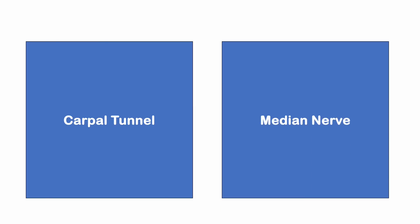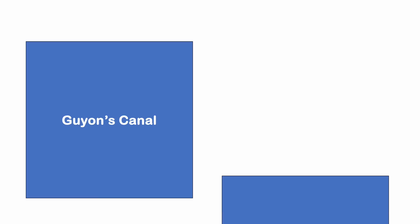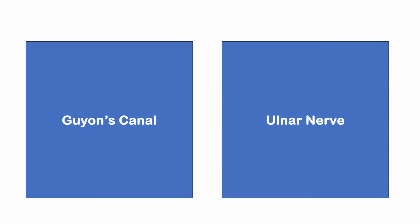Carpal tunnel contains the median nerve. Guyon's canal, which is on top of the carpal tunnel, contains the ulnar nerve.